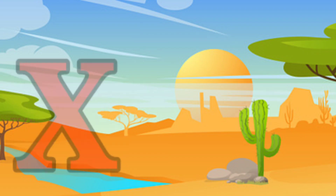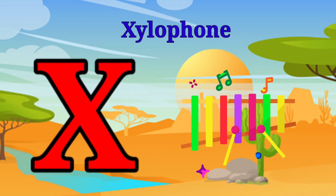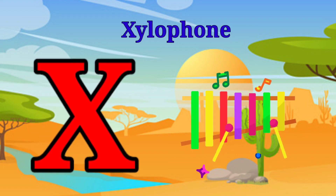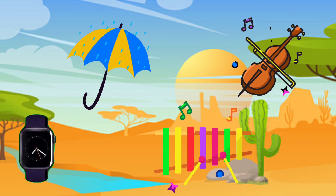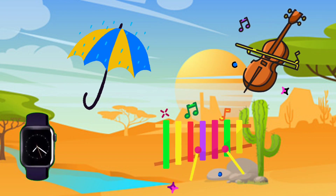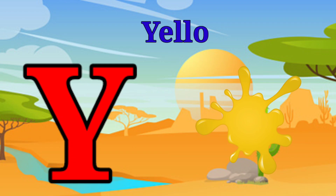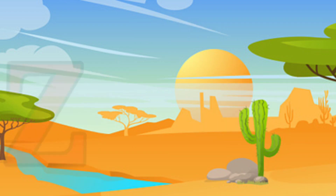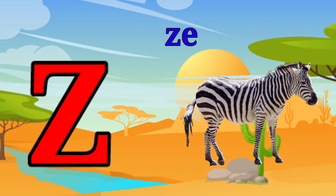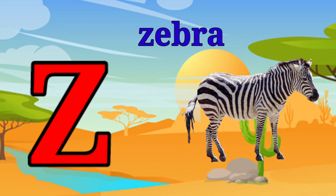X is for xylophone, x-x-xylophone. Y is for yellow, ye-ye-yellow. Z is for zebra, z-z-zebra.